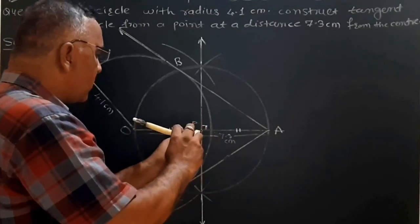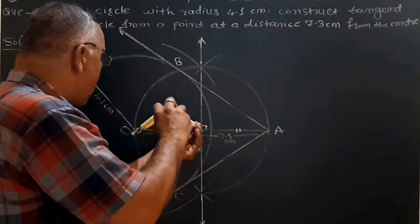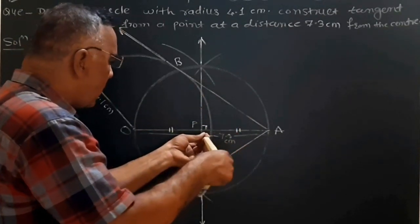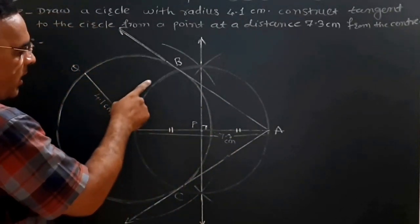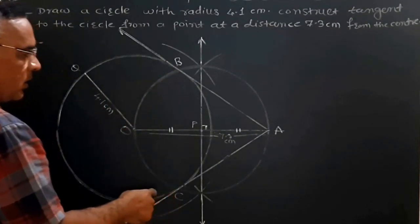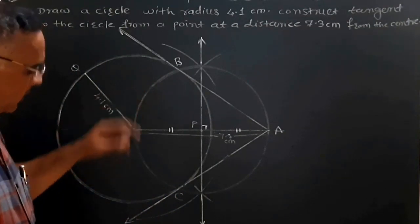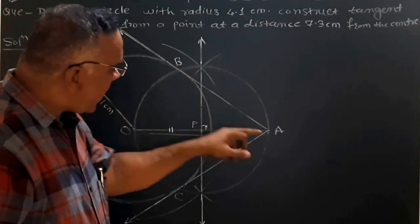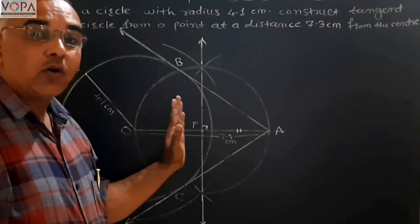Take center P and draw a circle in this way. This circle intersects the original circle at points B and C. BA and CA are diameters of the drawn circle.